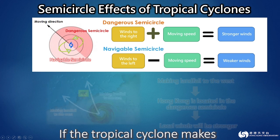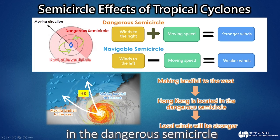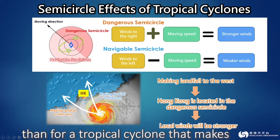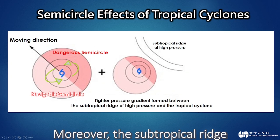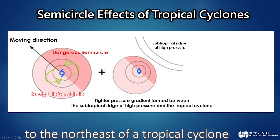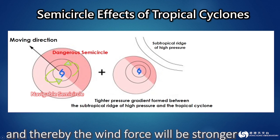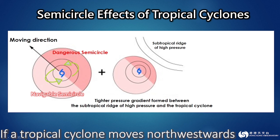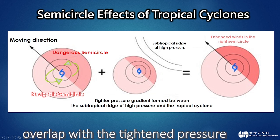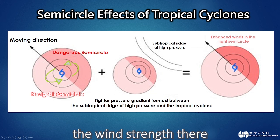If the tropical cyclone makes landfall to the west of Hong Kong, as Hong Kong is located in the dangerous semicircle, local winds would generally be stronger than for a tropical cyclone that makes landfall to the east of Hong Kong. Moreover, the subtropical ridge of high pressure is normally located to the northeast of a tropical cyclone. The pressure gradient between them will be tighter, and thereby the wind force will be stronger. If a tropical cyclone moves northwestwards, the dangerous semicircle would just overlap with a tightened pressure gradient on the northeastern side, which will further increase the wind strength there.